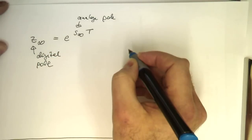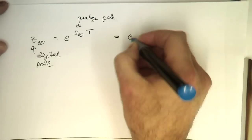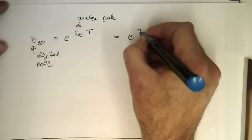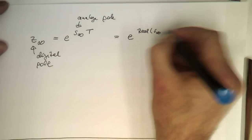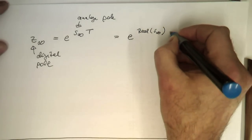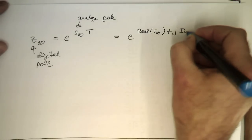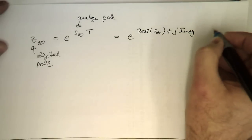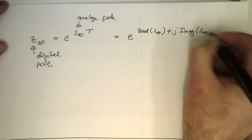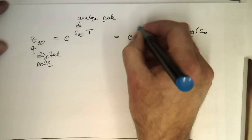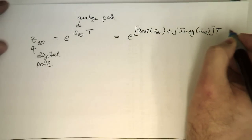We know that if we decompose this here in e to the real of s infinity and then plus j imaginary value of s infinity, and then the whole thing multiplied by T.